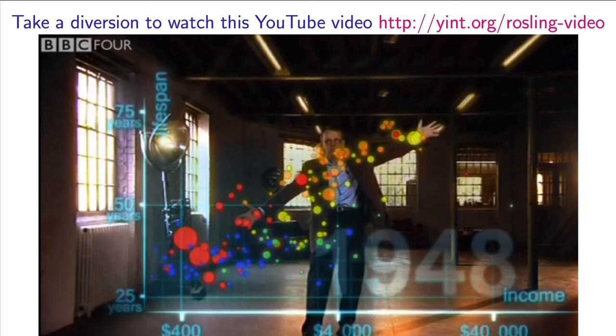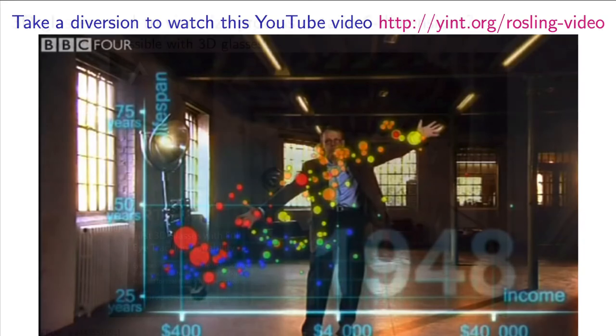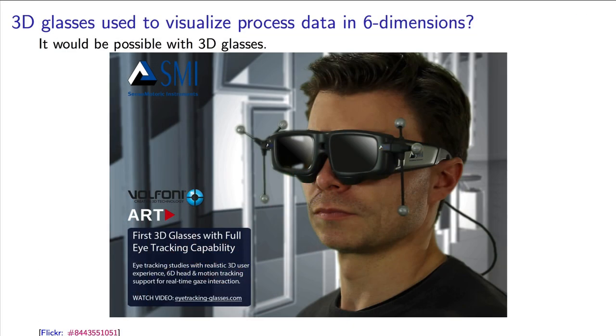Then when he animates the graph through history, time now becomes a fifth. If you had virtual reality 3D glasses, you could add a sixth dimension with X, Y, and Z axes. Could this be a tool that engineers and operators use to better understand and control their processes?